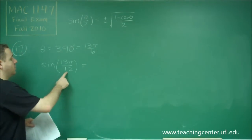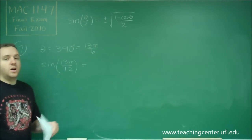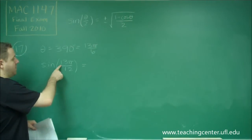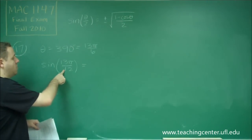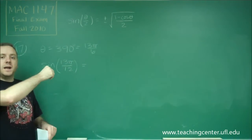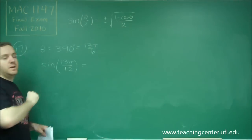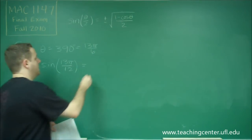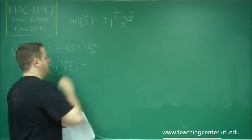So this angle, or 195 degrees — 13 over 12 is a little bit more than pi, so this is going to be in quadrant 3, therefore sine is going to be negative.